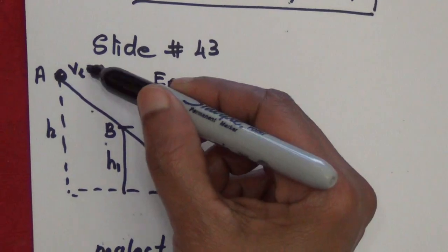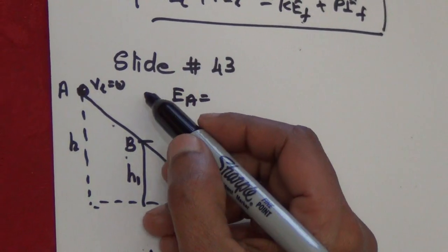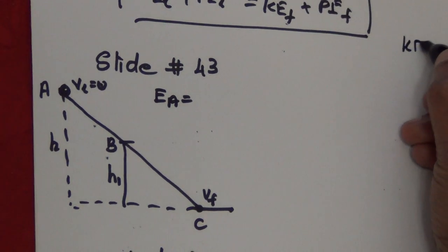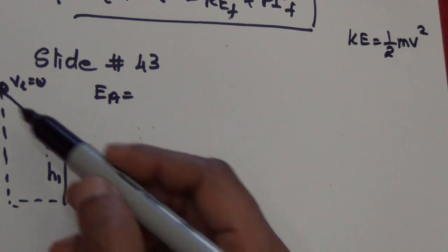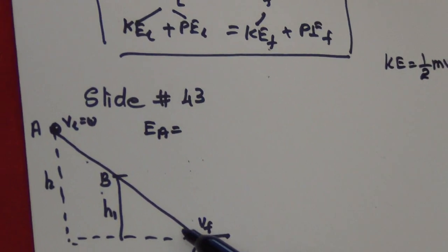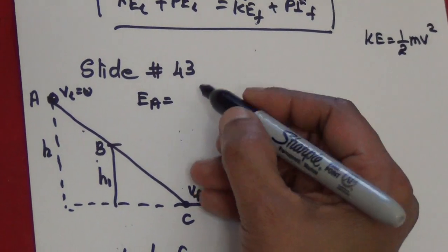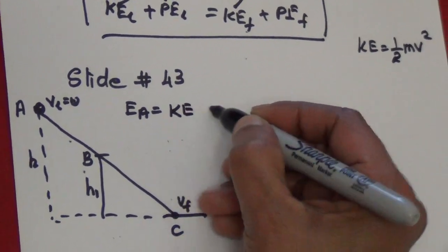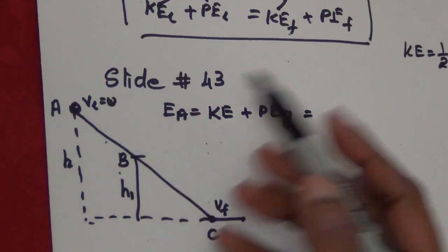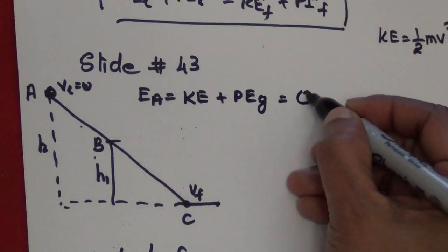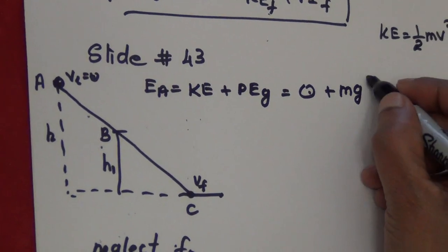Let's find the total energy at each position. At position A, kinetic energy is zero because velocity is zero — KE = ½mv² = 0. We don't have springs, so potential energy at A is mgh, where h is the vertical height.